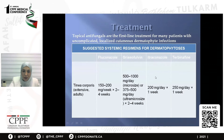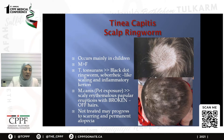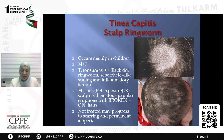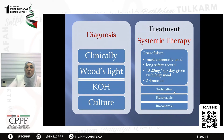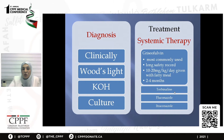Tinea capitis is very common in children and affects males more than females. It appears as scaly erythematous eruptions with broken-off hair that can be easily removed. If not treated, it may progress to scarring and permanent alopecia. It is diagnosed clinically by the broken-off hair; sometimes Wood's lamp, KOH preparation, or culture is required. Importantly, tinea capitis must be treated systemically. Griseofulvin is safe and is given at 10-20 mg/kg with fatty meals, and treatment may last up to four months.